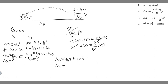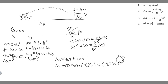For delta y: the initial velocity in y is 50 times sine of 30, multiplied by t which is 3, plus one-half times the acceleration which is minus 9.8, times t squared which is 3 squared. Make sure you're in degrees when you calculate this. When you plug it in, you get delta y equals 30.9 meters.